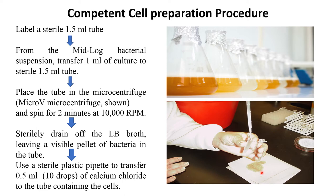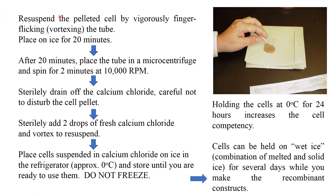After centrifugation, drain off the LB broth leaving a visible pellet of bacteria in the tube. Then use a sterile plastic pipet to transfer 1.5 ml of calcium chloride to the tube containing cells. Re-suspend the pelleted cells by vigorous vortexing, then place on ice for 20 minutes.